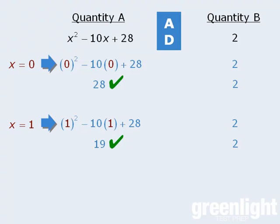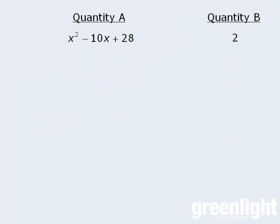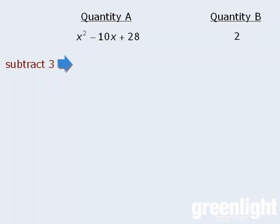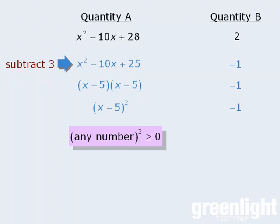Now before I end this lesson, let's see if we can solve this question in a more definitive manner. Let's begin by subtracting three from both quantities. When we do so, we get the following. Now why did I do this? Well, notice that we can now take quantity a and factor it as follows. Now as an aside, if any of this looks unfamiliar to you, don't worry, we'll cover factoring in a future module. Now from here, we can rewrite quantity a as (x minus 5) squared. Since the square of any value is always greater than or equal to 0, we know that quantity a must be greater than negative 1, which means the correct answer here is a.